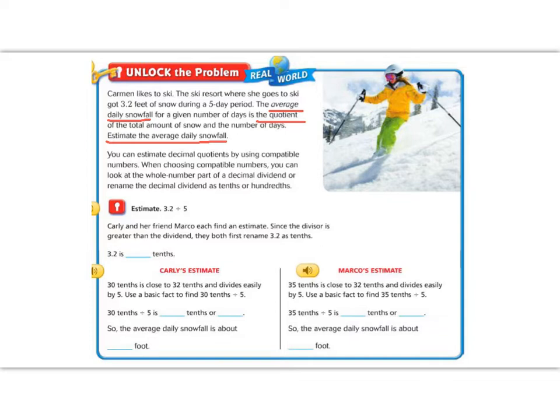We have talked about compatible numbers earlier in the year. Compatible numbers means when we pick a specific number when we round that we know our divisor is going to go into, and so that we get a nice easy mental math estimate. So we're going to divide 3.2 by 5.